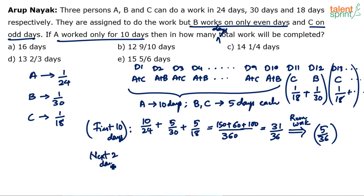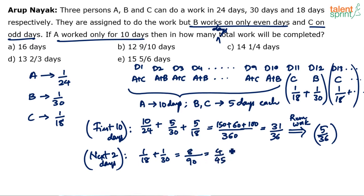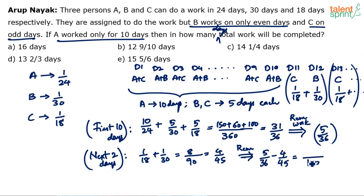In the next two days (days 11 and 12): C does 1/18 and B does 1/30. LCM of 18 and 30 is 90, so 1/18 + 1/30 = 5/90 + 3/90 = 8/90 = 4/45. Remaining work after days 11 and 12: 5/36 − 4/45 = 25/180 − 16/180 = 9/180 = 1/20.